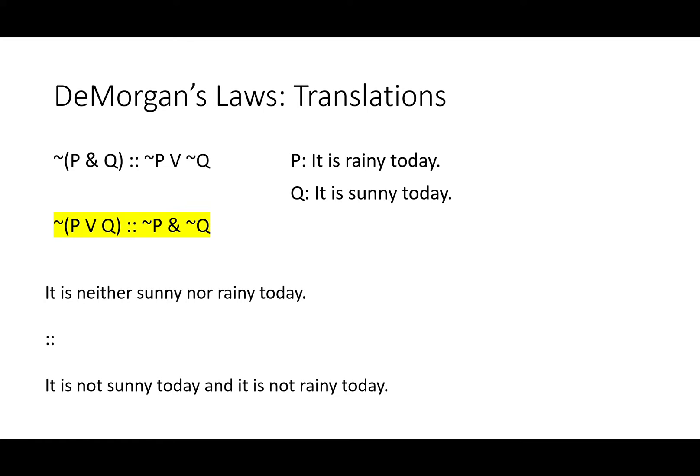We also know that it is neither sunny nor rainy today means it is not sunny and it is not rainy. Perhaps it's cloudy or snowy. It's neither one, so each one is false. Each one is false, so it's neither one.